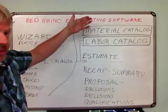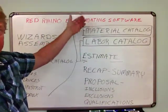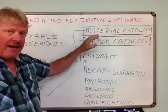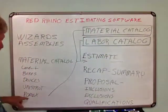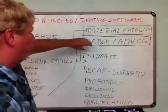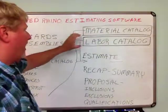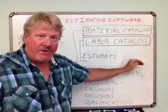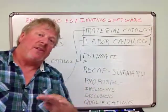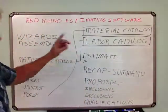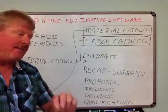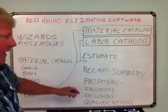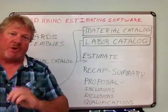So the material catalog has pricing for thousands of items and is updated monthly. The labor catalog is static — when you say you're going to install 650 feet of Romex, it pulls how much labor is needed for installing Romex and shows that in labor hours. There are three major components of an estimate: the estimate, the recap, and the proposal. I'm going to cover the recap and proposal.